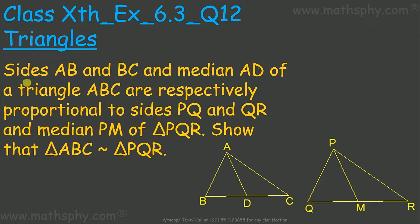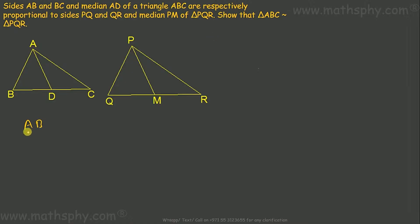This question says: sides AB and BC and median AD of triangle ABC are respectively proportional to sides PQ and QR and median PM of triangle PQR. Show that triangle ABC and triangle PQR are similar. We write AB over PQ equals AD over PM equals BC over QR.